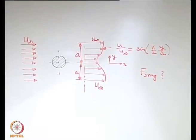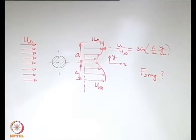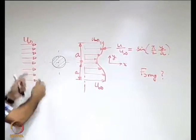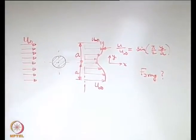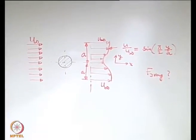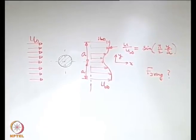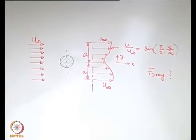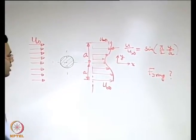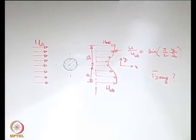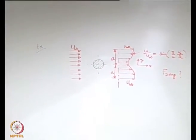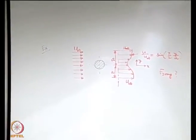We worked out a very similar problem when we were considering flow over a flat plate. This is not flow over a flat plate — this is flow past some body of arbitrary contour — but the philosophy remains the same. We have to identify a control volume and find the net force on it.